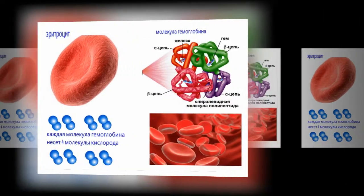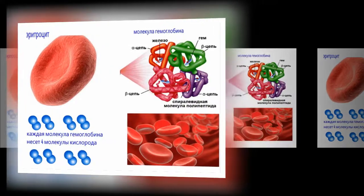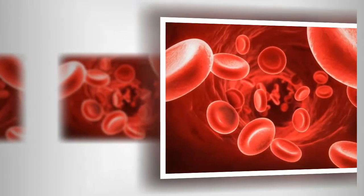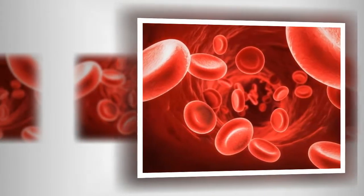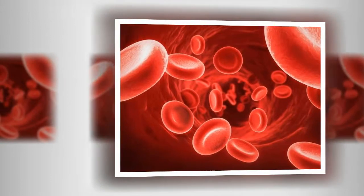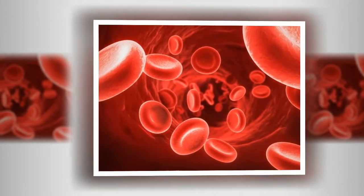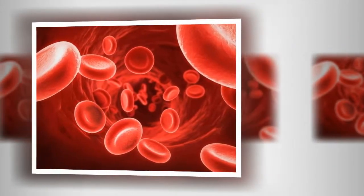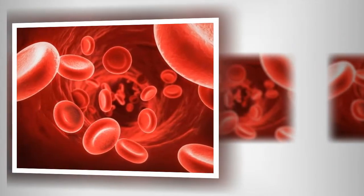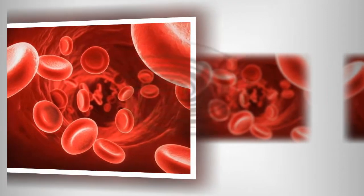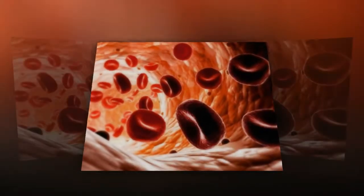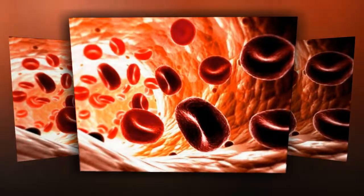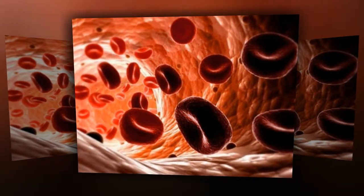The globulin chains are connected together. The normal adult hemoglobin, abbreviated hemoglobin or Hb, molecule contains two alpha globulin chains and two beta globulin chains. In fetuses and infants, beta chains are not common, and the hemoglobin molecule is made up of two alpha chains and two gamma chains.